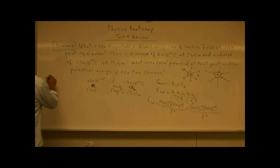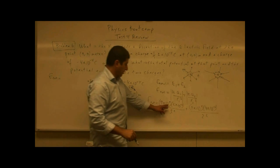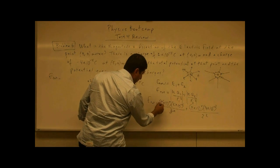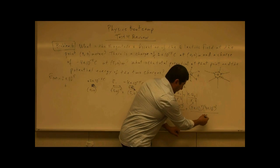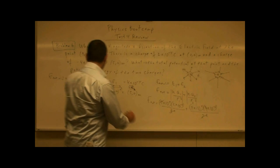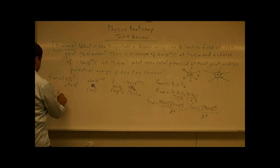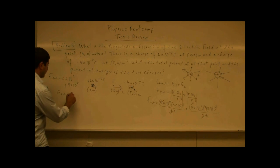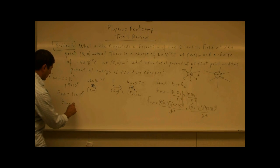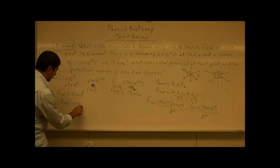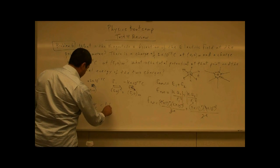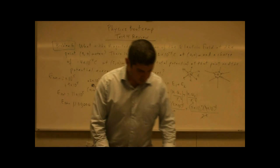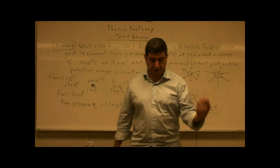So what do you get? Well, 10 to the 9th times 10 to the minus 4 is 10 to the 5th, and 9 cancels 9, giving 2 times 10 to the 5th. Then 4 cancels 4, giving 9 times 10 to the 5th. So 2 times 10 to the 5th plus 9 times 10 to the 5th equals 11 times 10 to the 5th, which is 1,100,000 newtons per coulomb — or in scientific notation, 1.1 times 10 to the 6th newtons per coulomb. So the electric field answer is 1.1 times 10 to the 6th newtons per coulomb, and the direction is to the right.